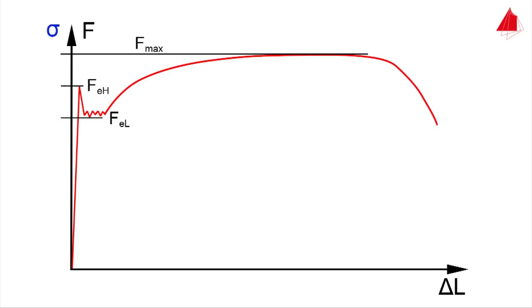The upper yield strength ReH is calculated by dividing the force FeH by the original cross-sectional area S0. The lower yield strength ReL is defined in a similar way. The maximum force divided by the original cross-sectional area is called tensile strength Rm.